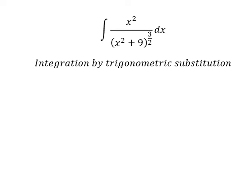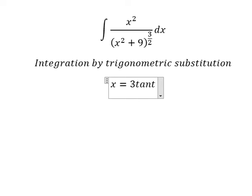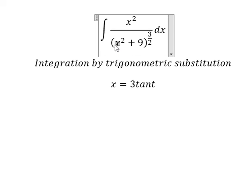I will put x equals 3 tan(t). With this substitution, we get 9 tan²(t), and then we do factorization: 9(tan²(t) + 1). We change tan²(t) + 1 into sec²(t).